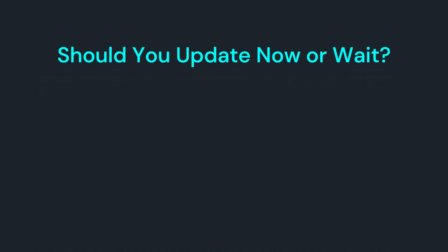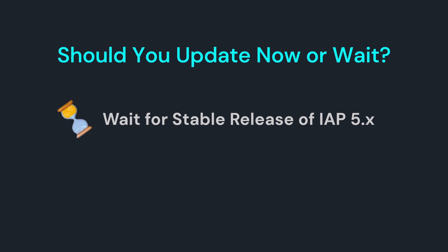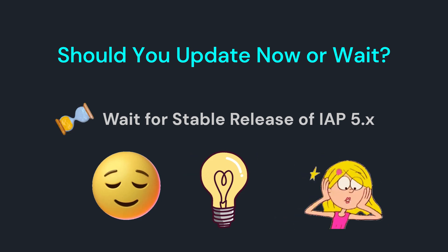Should you update now or wait? Here's my advice: if your app is working fine right now and you don't have urgent updates to submit, it's better to wait until Unity releases a stable IAP 5.x version. Because right now, the preview version could change and you might end up doing double work. You have time — Unity will most likely release a stable IAP 5.x well before the deadline. So stay patient, plan ahead, and you'll avoid unnecessary headaches.